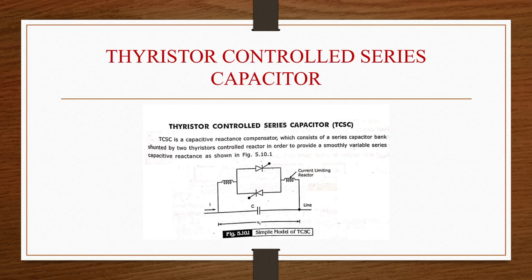Shunt controllers will be a variable impedance, variable source, or a combination of these. All shunt controllers will inject current into the system at the point of connection. If the injected current is in phase quadrature with the line voltage, the shunt controller will supply or consume variable reactive power. Any other phase relationship will involve real power also. Shunt controllers are of two types: SVC (static VAR compensator) and STATCOM (static synchronous compensator).